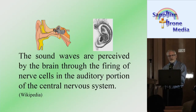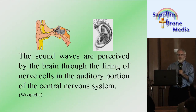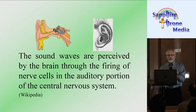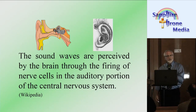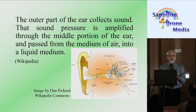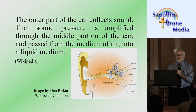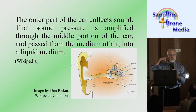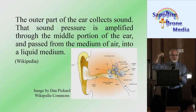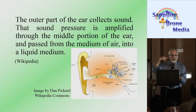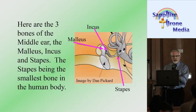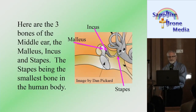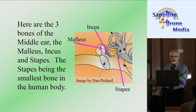The sound waves are perceived by the brain through the firing of nerve cells in the auditory portion of the central nervous system. That outer part of the ear collects sound; that sound pressure is amplified through the middle portion of the ear and passed from air into a liquid medium. Here are the three bones of the middle ear: the malleus, the stapes, and the incus — the stapes being the smallest bone in the human body.